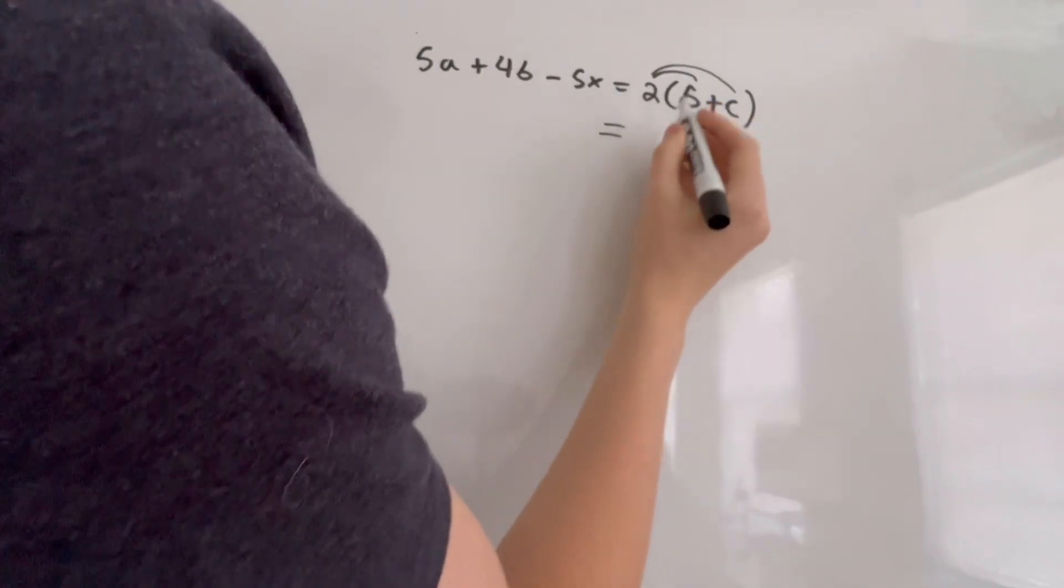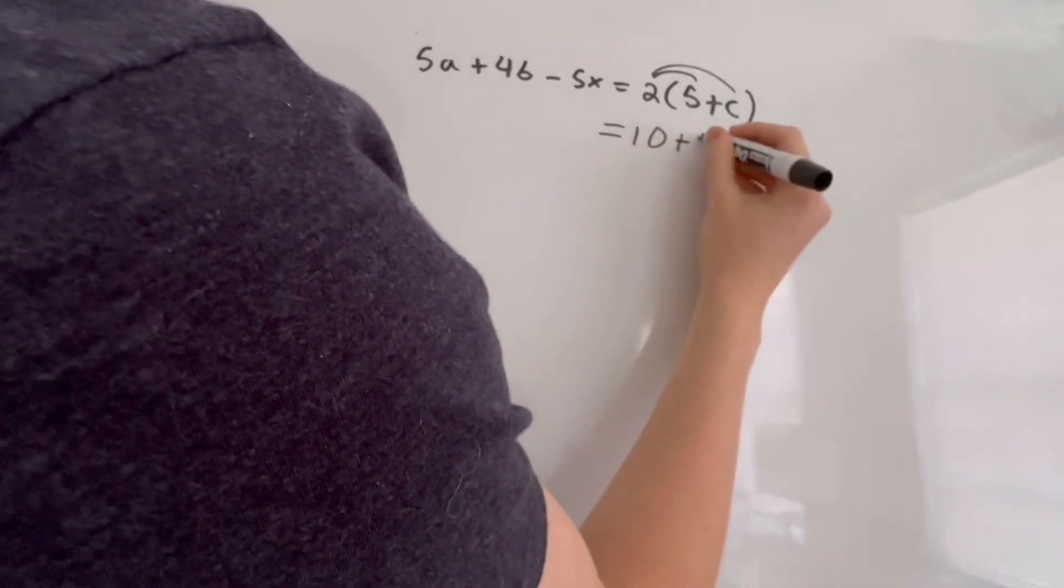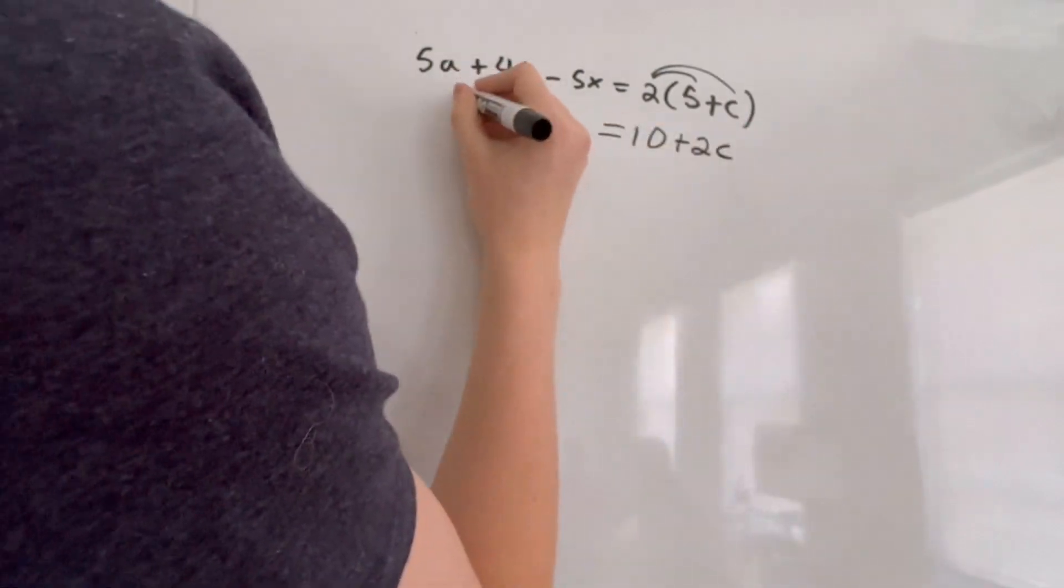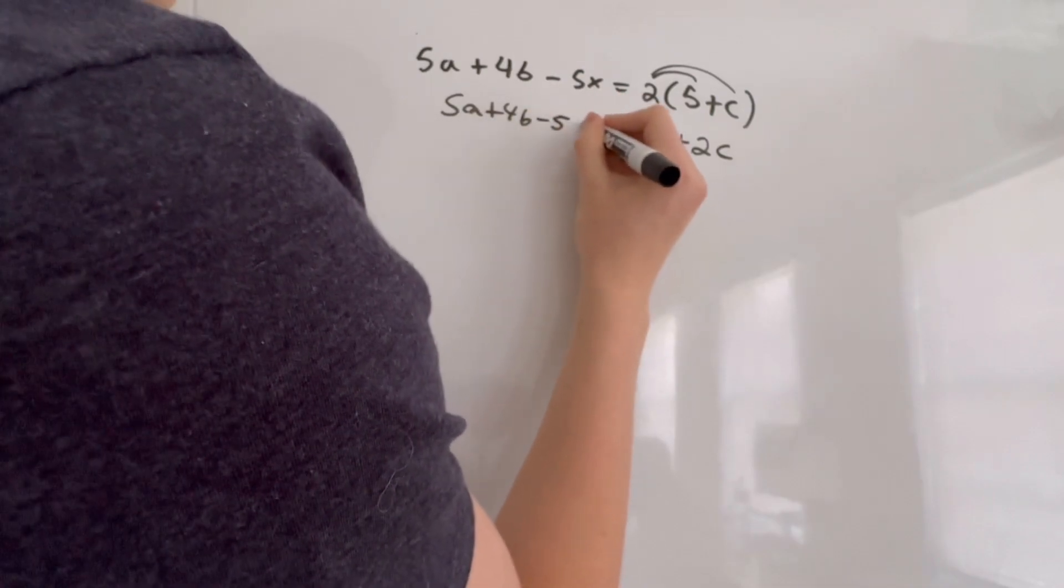So we have 2 times 5, which is 10, and then 2 times C, which is 2C. And then we have to write 5A plus 4B minus 5X.